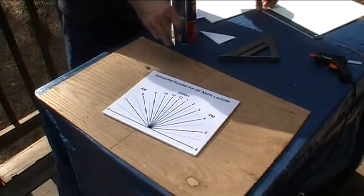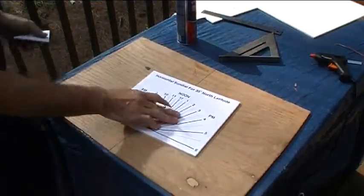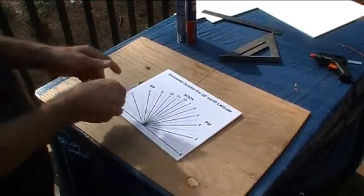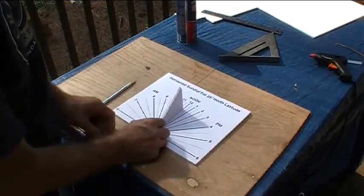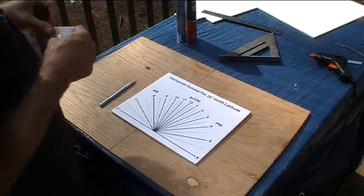Okie doke. So now I have my dial cut. I've got my gnomon cut. I'll go ahead and mount the gnomon onto the dial. And I'll do that with some hot glue.